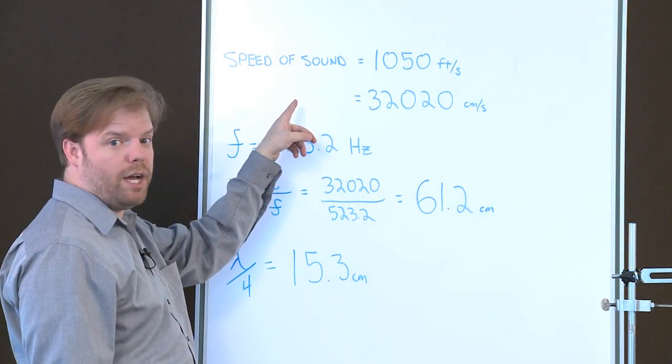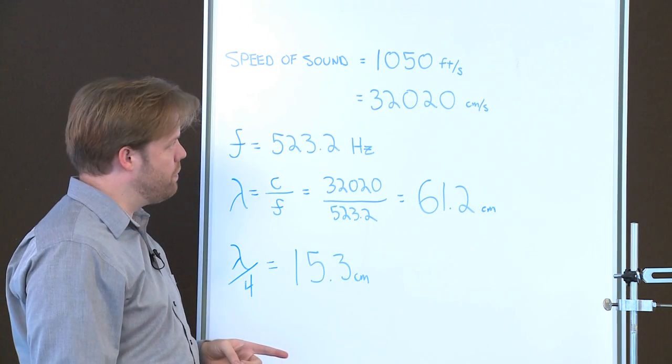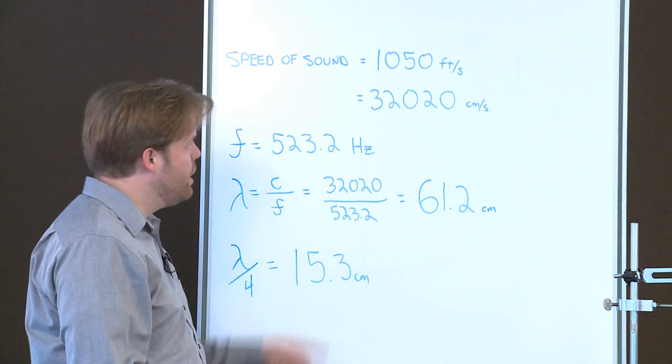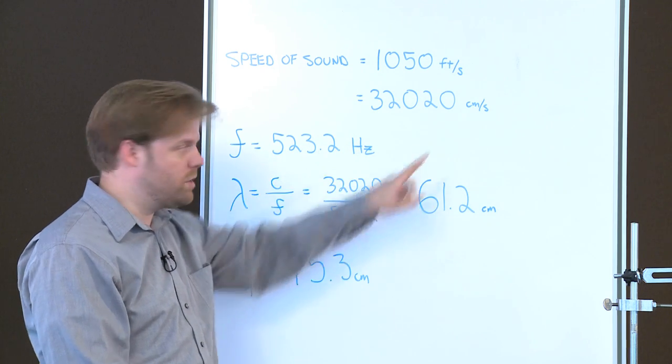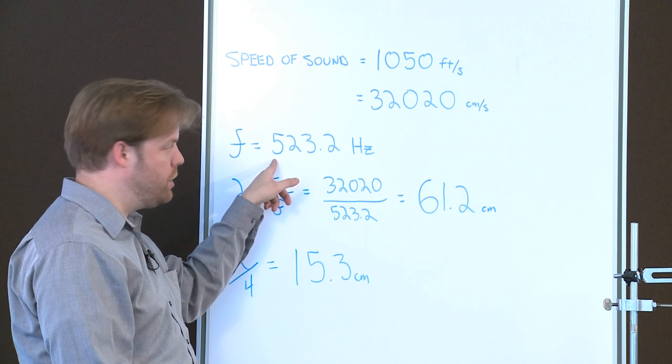First of all we need to start with the speed of sound. The speed of sound in this room is 1,050 feet per second. We need to convert that to centimeters per second because our tube here is labeled in centimeters. So in centimeters per second that's 32,020 centimeters per second. The frequency of our tuning fork is 523.2 hertz.